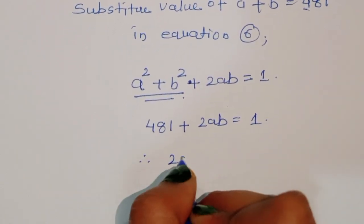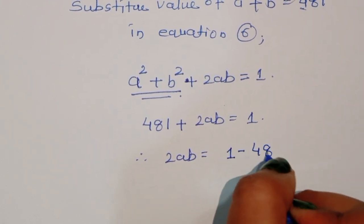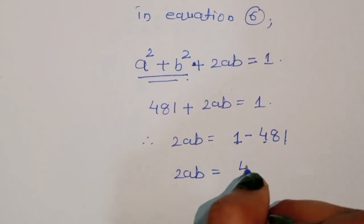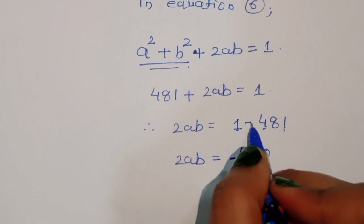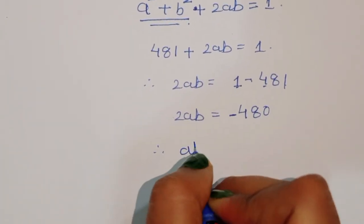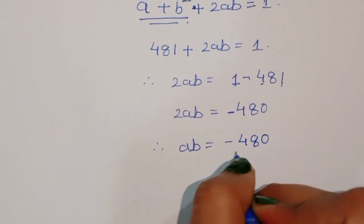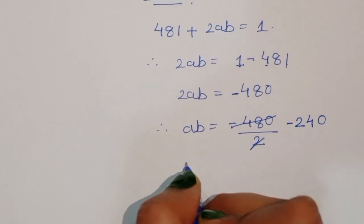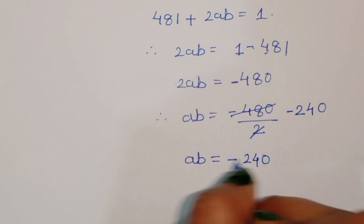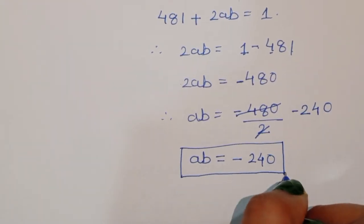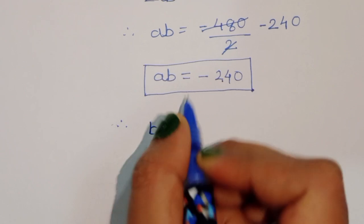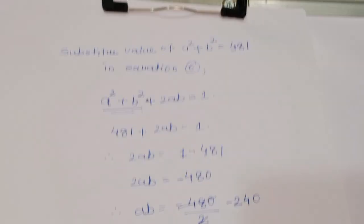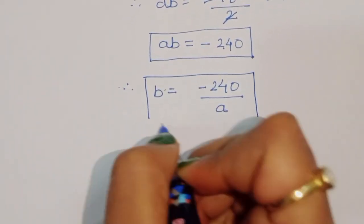Therefore, 2AB equals 1 minus 481, which gives 2AB equals minus 480. So AB equals minus 240. We can write B equals minus 240 divided by A. This is equation 7.